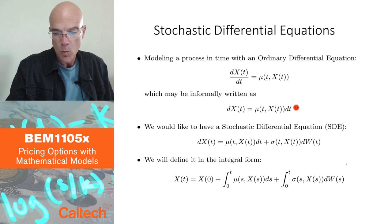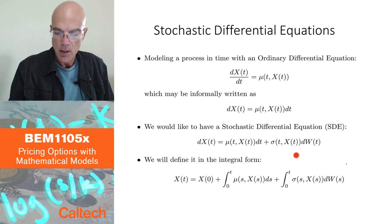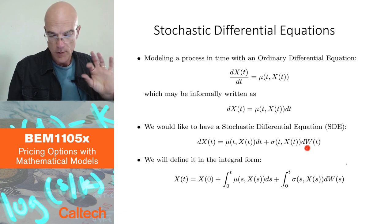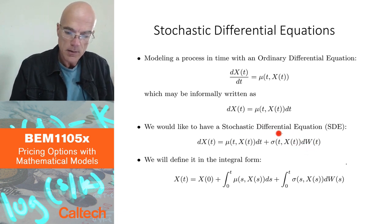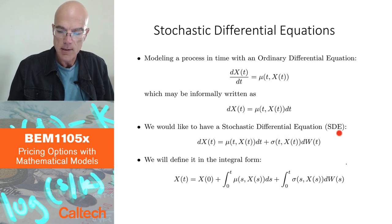And now we add to it a random component. We add some other function of state and time, sigma of t and x of t. And we add change in the Brownian motion here, dW of t, infinitesimal change. That means really small. And that's called a stochastic differential equation, an SDE.